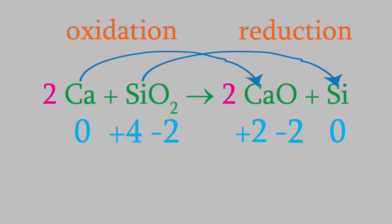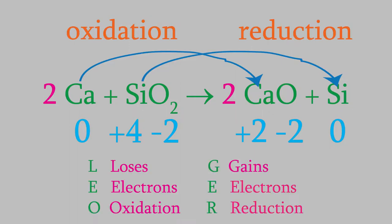So in our reaction, the calcium lost electrons, so it was oxidized. And the silicon gained electrons, so it was reduced.